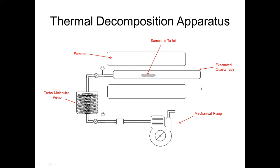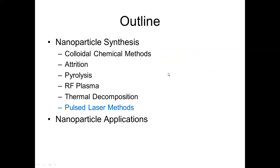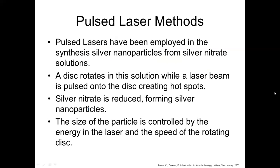An important issue after making lithium nanoparticles — especially since lithium is a group one material — is that these materials want to chemically react. So a key component of this process is the ability to stabilize the lithium nanoparticles in an inert environment, often using a material like argon.